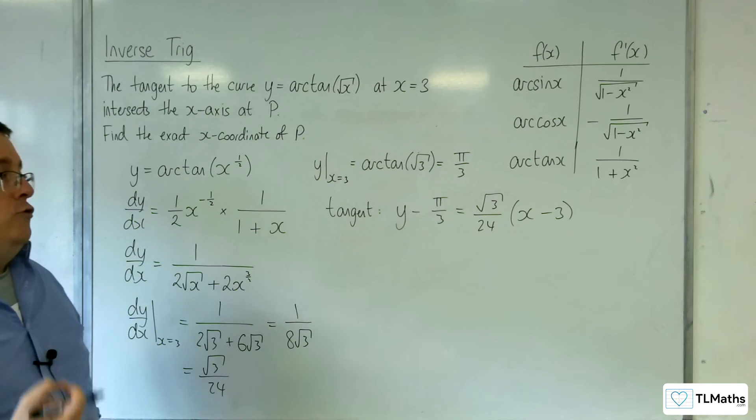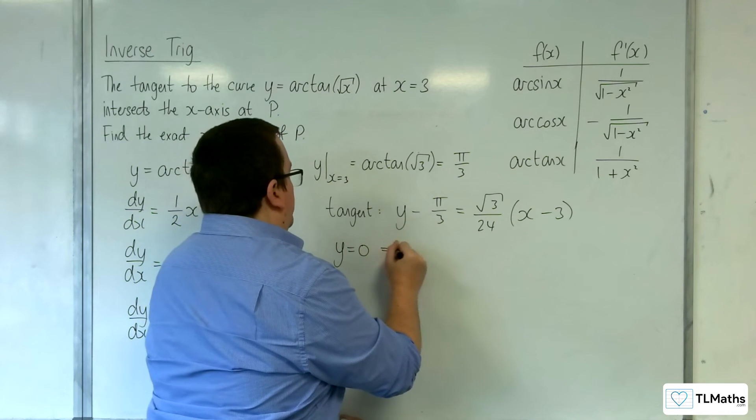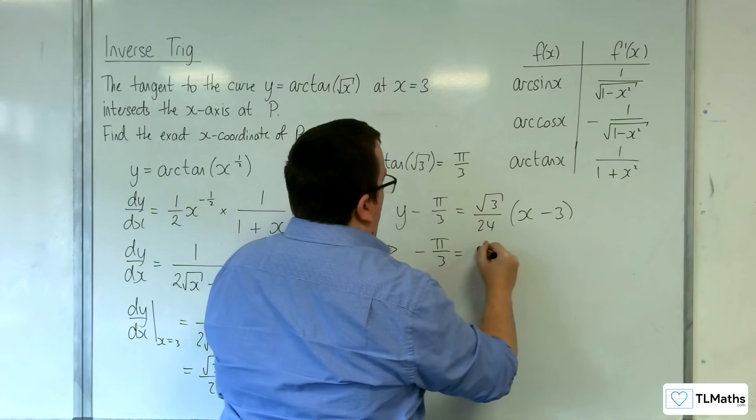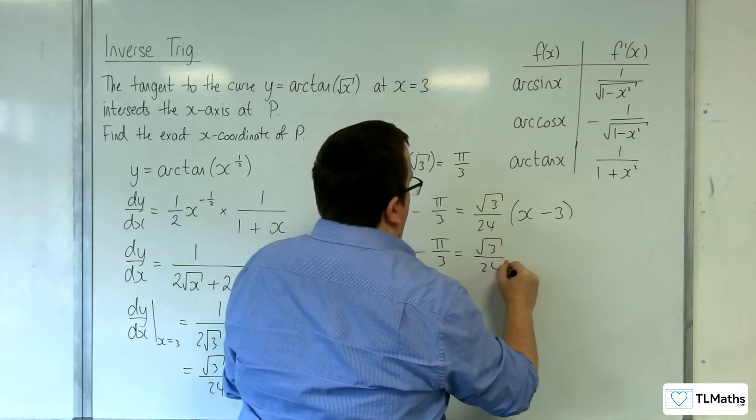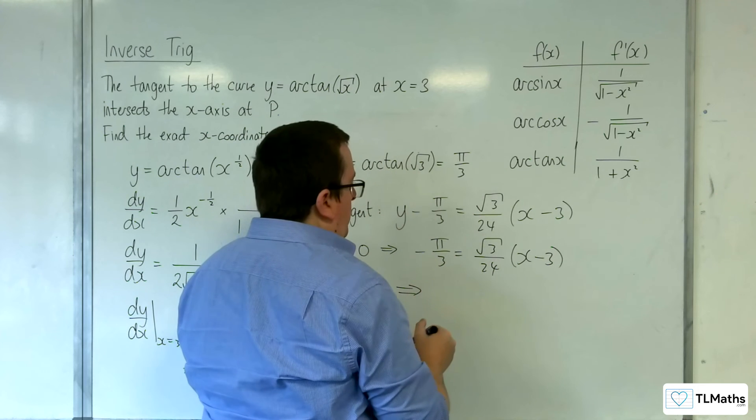So we need to work out where that crosses the x-axis, which is when y is equal to 0. So minus pi over 3 is equal to root 3 over 24 times x take away 3. We need to rearrange that to get x equals.